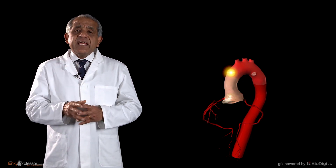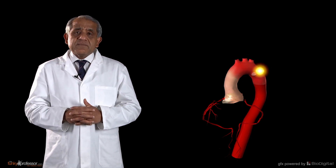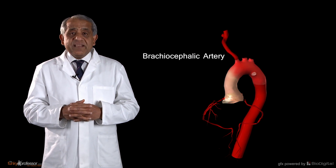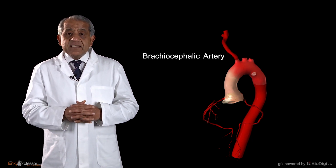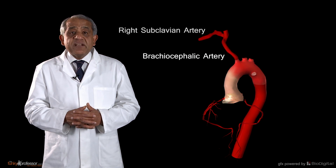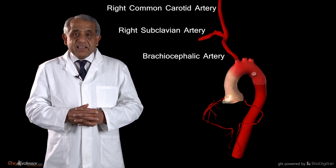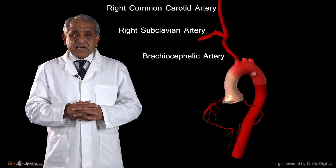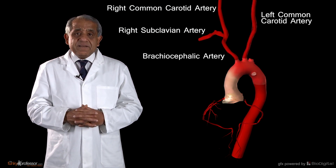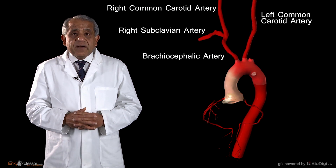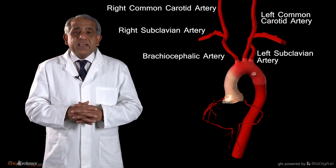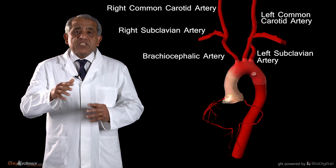From the convexity of the aortic arch arise three large branches. The first and largest is called the brachiocephalic artery, which runs upwards and to the right, and behind the right sternoclavicular joint it breaks up into the right subclavian and right common carotid arteries. The next branch arises from the very summit of the aortic arch and is the left common carotid artery. The final branch is the left subclavian artery. All three branches arise from the convexity of the aortic arch.